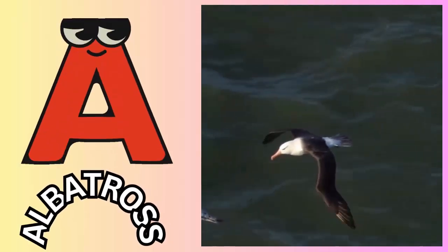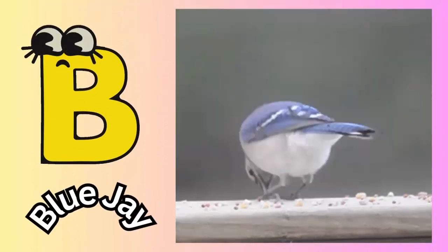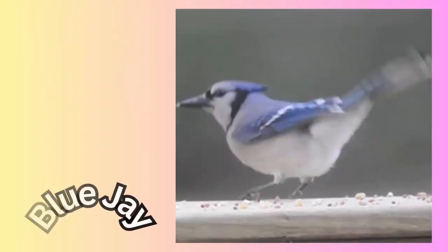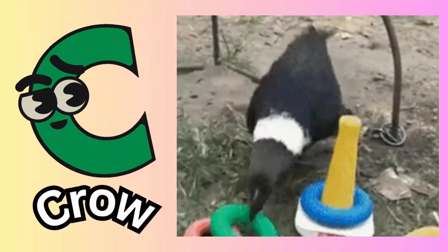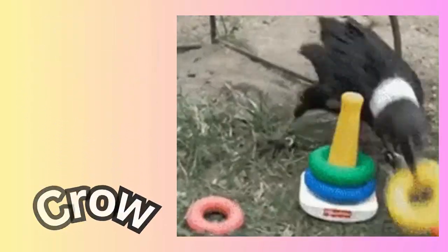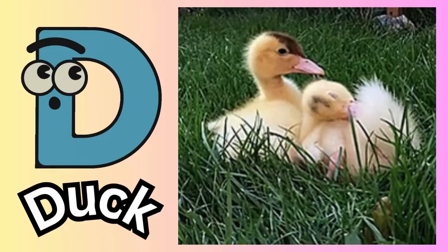A. A for albatross. B. B for blue jay. C. C for crow. D. D for duck.